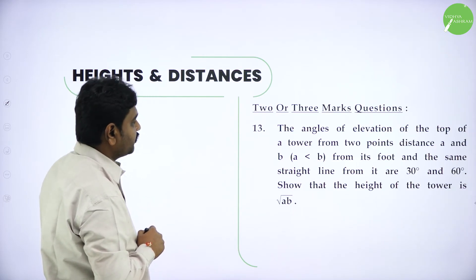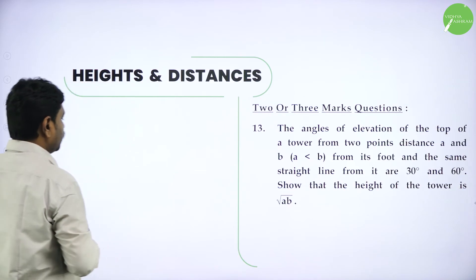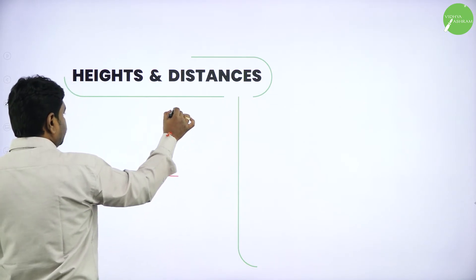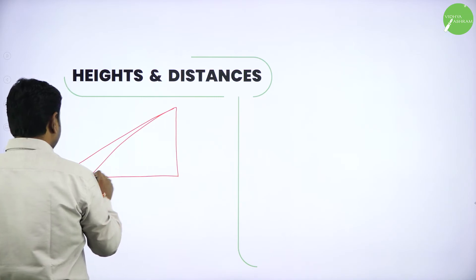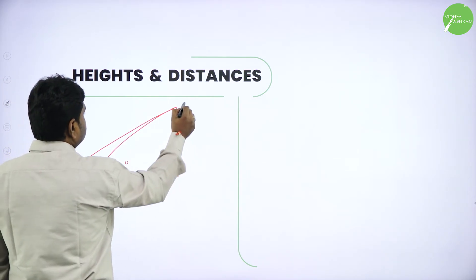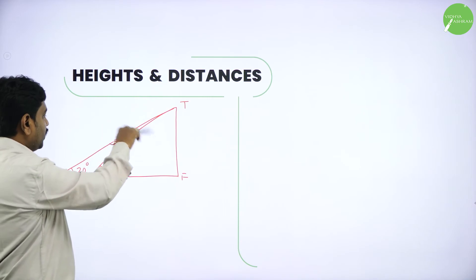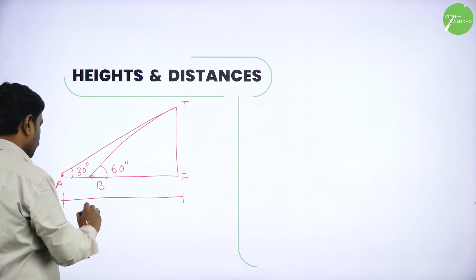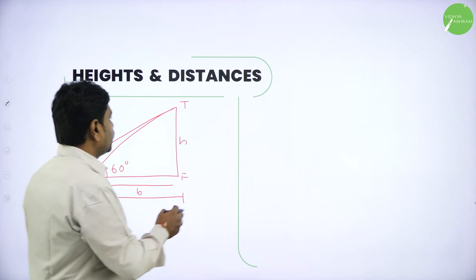Now the 13th problem: the angle of elevation of the top of a tower from two points at distances A and B from its foot on the same straight line is 30 degrees and 60 degrees. Show that the height of the tower is root AB. Drawing the diagram: from the foot of the tower there are two points — one at distance A making 30 degrees and one at distance B making 60 degrees — and let H be the height of the tower.